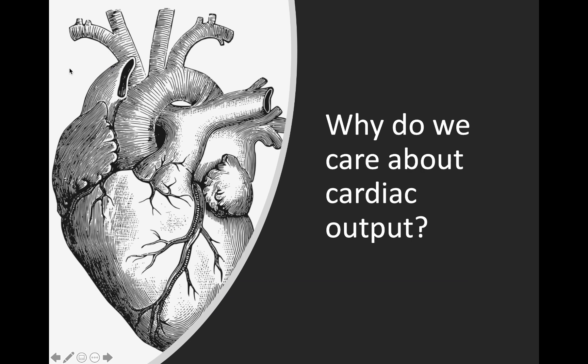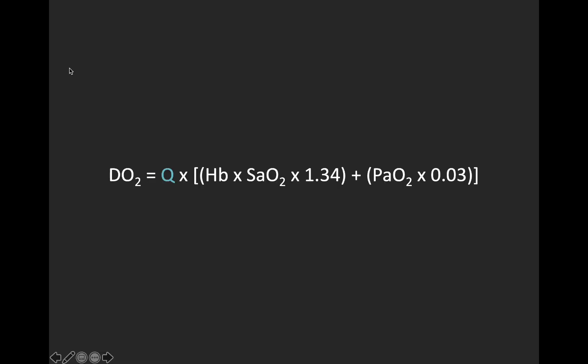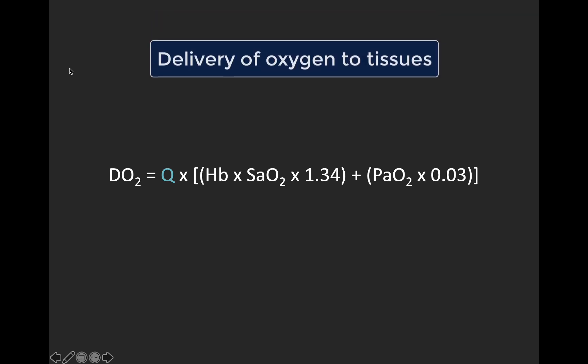Before we dive in, let's back up and think about why we care about cardiac output, because this is a common question and it's worth exploring what this technique adds above basic 2D qualitative POCUS assessment of cardiac function. To answer this question, we're first going to review a bit of physiology. This equation should look vaguely familiar from medical school or maybe a critical care rotation — it's the equation for the delivery of oxygen to the tissues, which is something we're often trying to optimize in shock states.